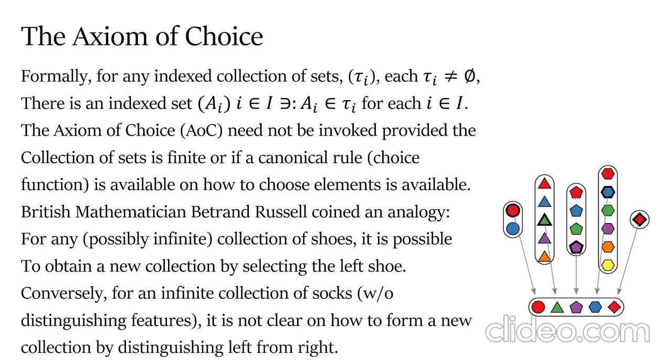British mathematician Bertrand Russell coined an analogy: for any possibly infinite collection of shoes, it is possible to obtain a new collection by selecting the left shoe. Conversely, for an infinite collection of socks without distinguishing features, it is not clear how to form a new collection by distinguishing left and right.